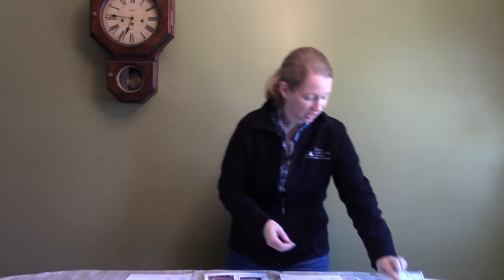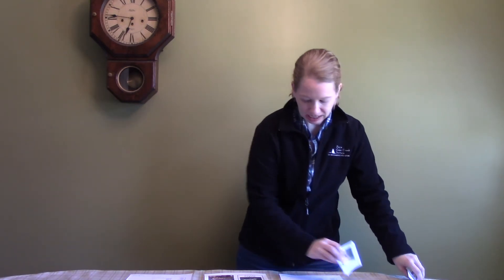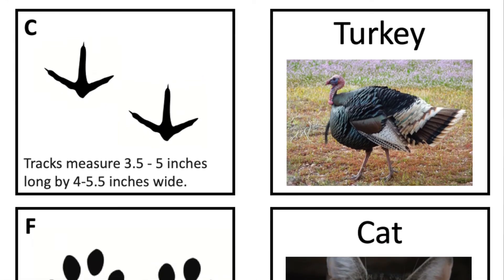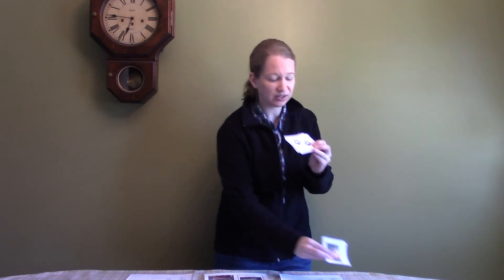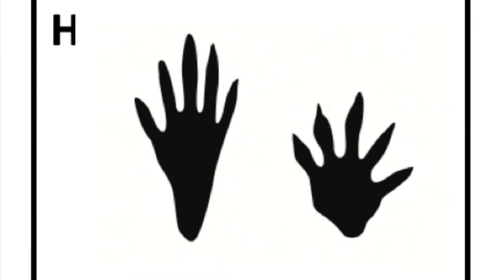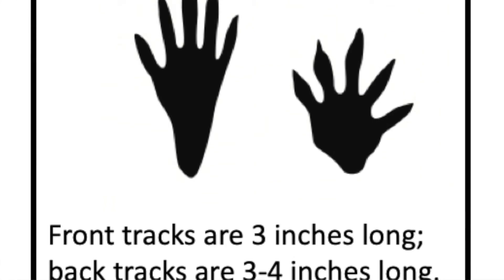For our animal tracking activity, we also have cards that have footprints or tracks on them and different animal pictures. See if you can match up the animal with the footprint. When you're looking at the footprints, observe different things — the size is indicated, and you might also notice different numbers of toes or claw marks. Try to think of what animals might have that many toes or those types of claws.